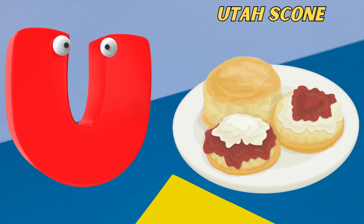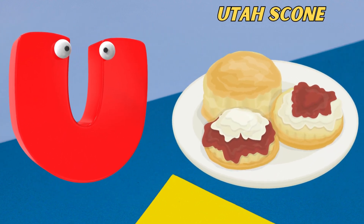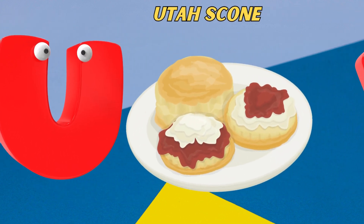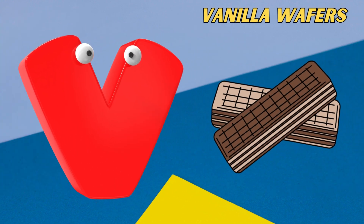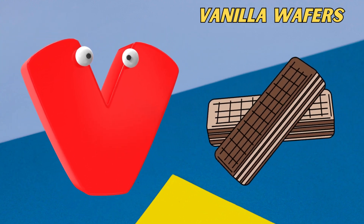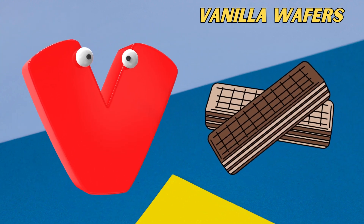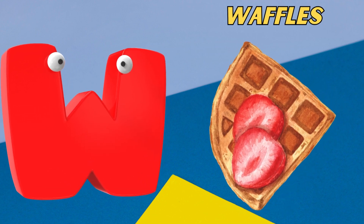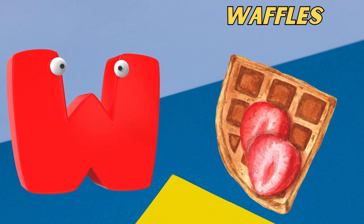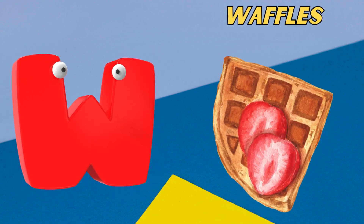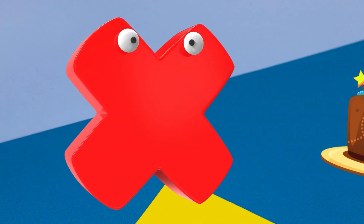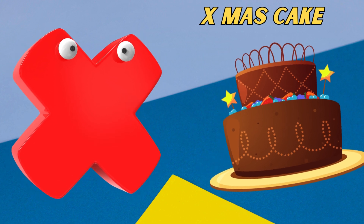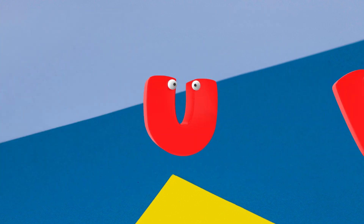U is for Utah Skull. U, U. Utah Skull. V is for Vanilla Wafers. V, V. Vanilla Wafers. W is for Waffles. W, W. Waffles. X is for X-Moss Cake. X, X. X-Moss Cake.